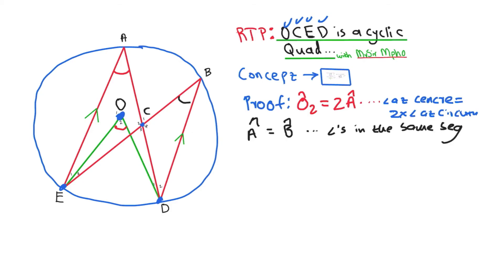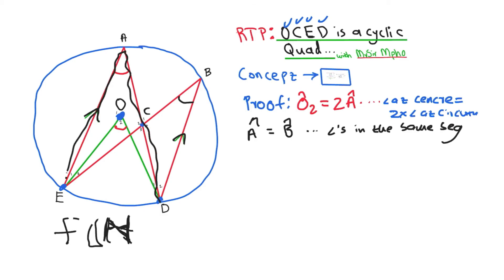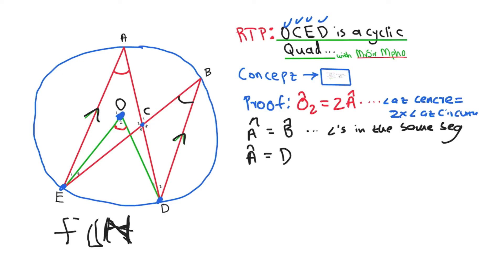There's no way a question gives you parallel lines for nothing. The parallel lines AE and BD have to be used. Recognizing the Z-shape means we have alternate angles. So angle A equals angle D2 — alternate angles, since AE is parallel to BD.